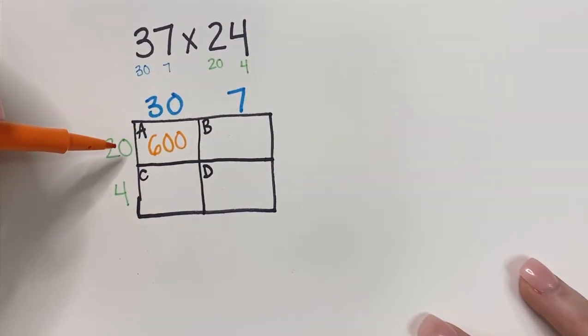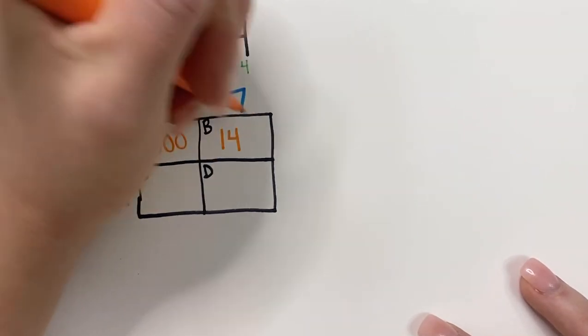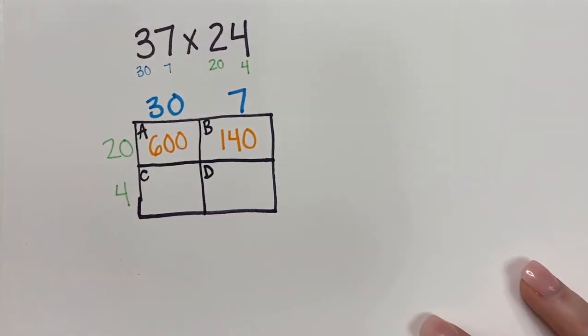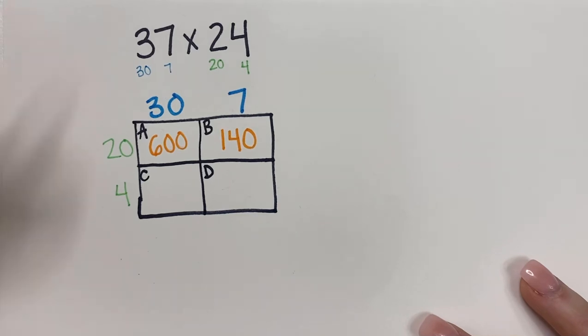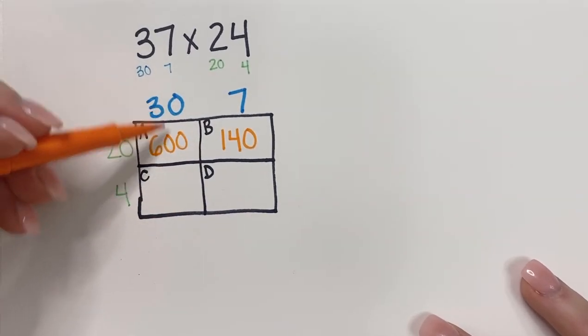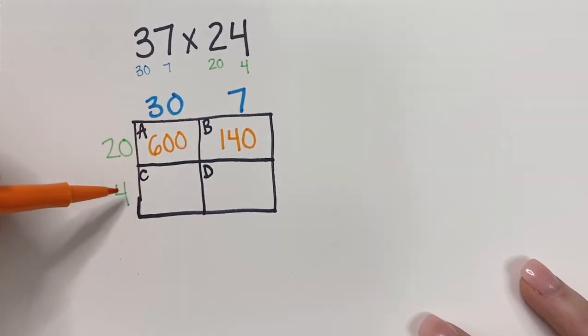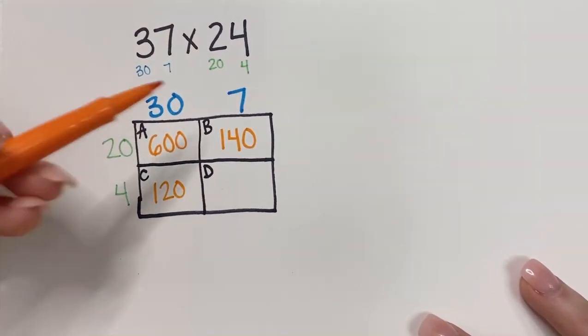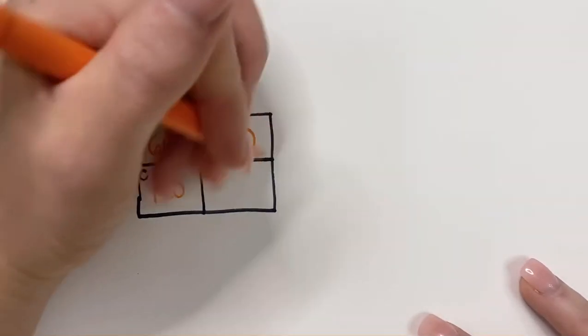7 times 20. 2 times 7 is 14. And then I know I put a 0 at the end. I'm going to fill out the other boxes. I see 30 times 4. 3 times 4 is 12 with a 0. And then last but not least, 4 times 7 is 28.